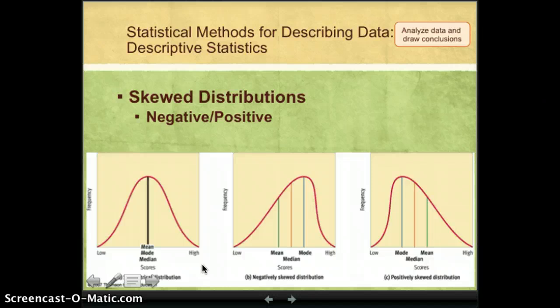If, however, we find that the mean, the median, and the mode are not the exact same score, we know that our distribution is skewed. It's kind of off-kilter a little bit. And it can be negatively skewed. That means that there's a tail out to the low or negative side. In this case, the mean is lower than the median and the mode.